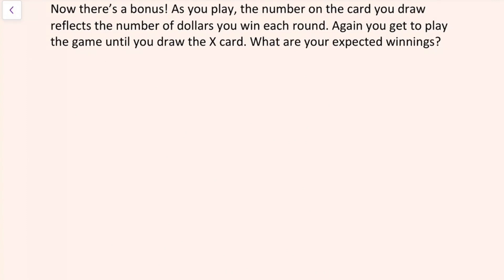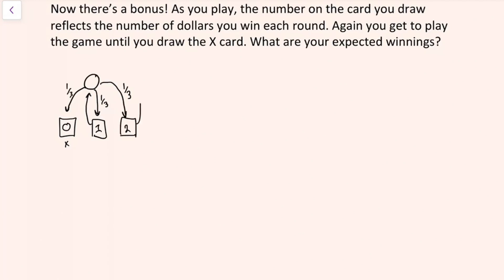The setup for this problem is that you're in a system where a third of the time the game ends and you win nothing on that round because you drew the X card. Another third of the time you win one dollar because you drew the one card, and then you return to the game. And a final third of the time you win two dollars because you drew the two card, and then you return to draw on the next round.